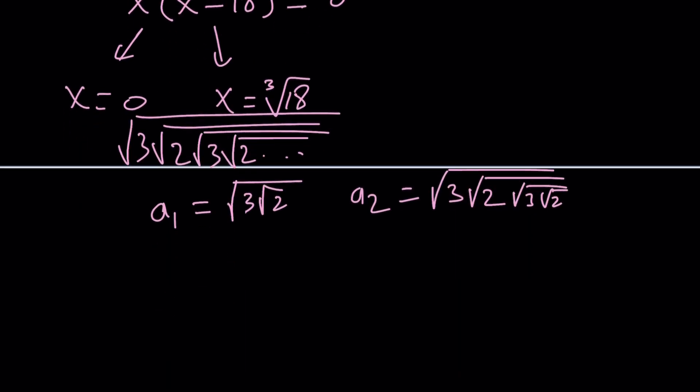So notice that a sub 1 is positive, can't be 0. And a sub 2 is greater than that. Why? Because the 2 here is multiplied by something greater than 1, and everything else is the same. So a sub 2 is greater than a sub 1. You can definitely prove it in the general case. But notice that this is an increasing sequence.